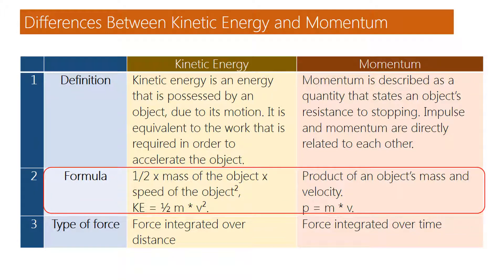Formula of kinetic energy: half into mass of the object into speed of the object squared. KE equals half into m into v squared. Formula of momentum: product of an object's mass and velocity. p equals m into v.